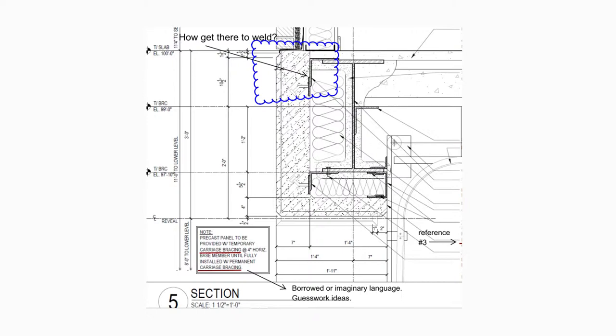Here is a detail from an architect. The note says: 'precast panel to be provided with temporary carriage bracing at four-inch horizontal base member until finally installed with permanent carriage bracing.' I Googled it and the only citations I found were about the undercarriage of a race car. The rule: don't make up your own words, and don't borrow from another field. If you don't know what others call it, learn it or say minimal things about it.